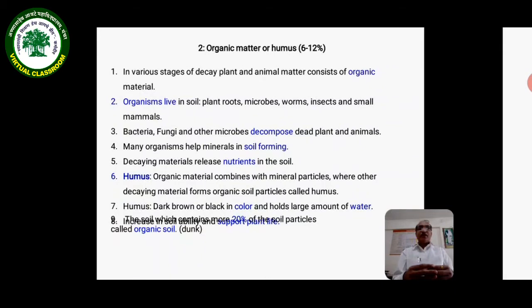Organic material combines with mineral particles where other decaying material forms organic soil particles called humus. Humus is dark brown to black in color and has high water-holding capacity and energy source for plants.